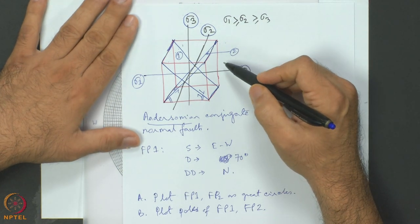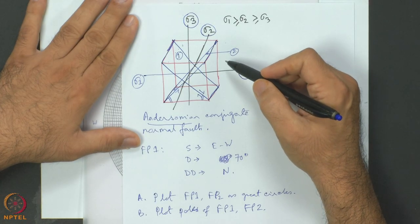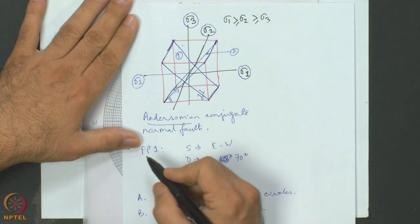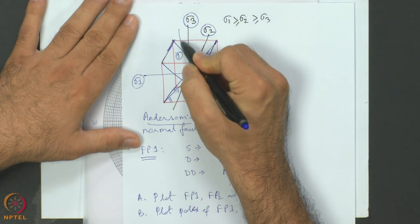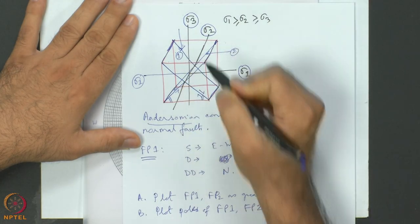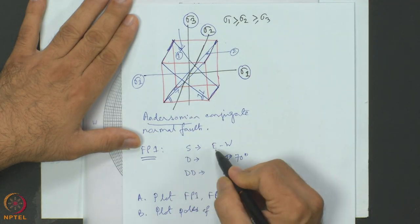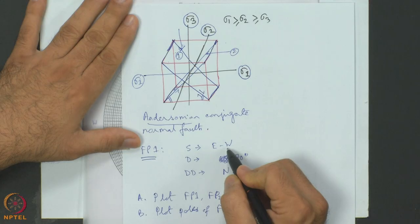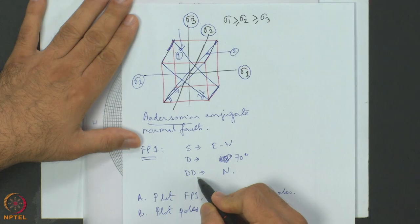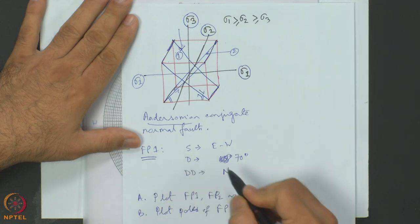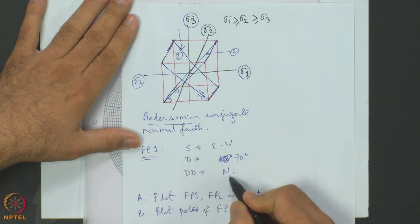Imagine someone went to the field and using a clinometer or Brunton measured the attitude of fault plane 1. They found that the strike is east to west, the dip amount is 70 degrees, and the dip direction of fault plane 1 is towards geographic north.